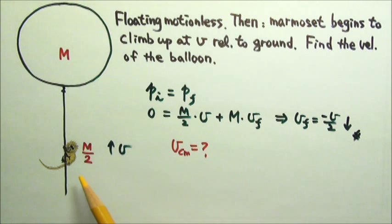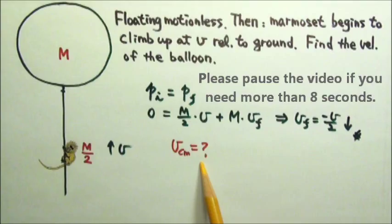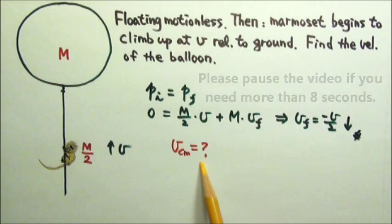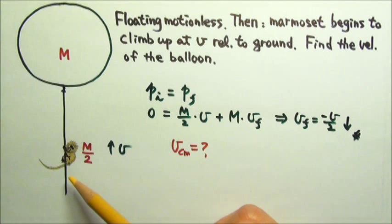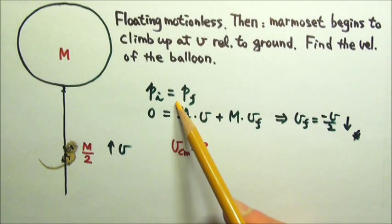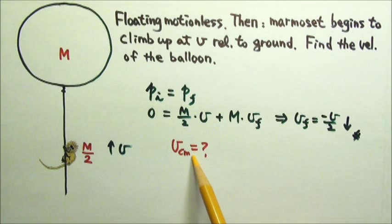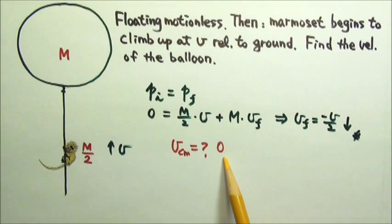What about the velocity of the center of mass of this system while the marmoset is climbing? Initially the whole system is at rest — there is no motion, the velocity is zero. That means the center of mass of the whole system is at rest. Since the net force on the whole system is zero, momentum is conserved, meaning the center of mass starts at rest and stays at rest. So the velocity of the center of mass this entire time is zero.